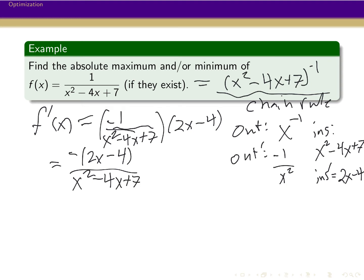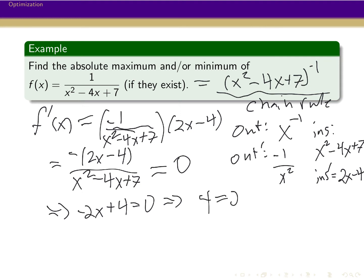Now to find the critical points, we set the derivative equal to zero. The denominator — the quadratic on the bottom — is always going to be positive for all values, so we just need to figure out when the numerator equals zero. That's when minus 2x plus 4 equals 0, which is when 4 equals 2x. So we have a critical point at x equals 2, and that's our only critical point.